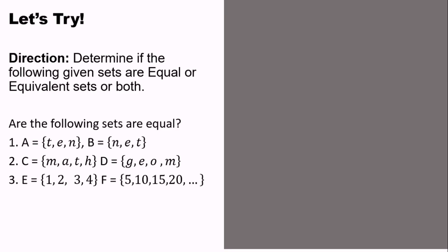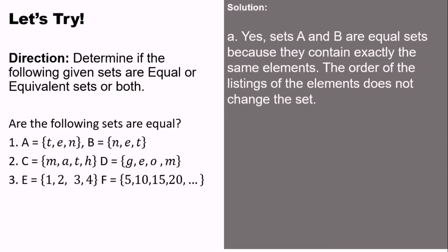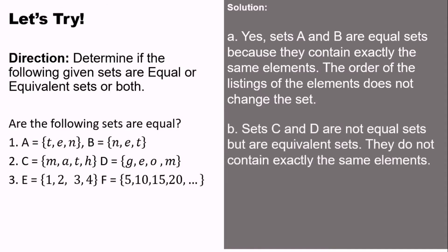So let's try. Direction: determine if the following given sets are equal or equivalent sets or both. Number 1: yes, set A and set B are equal, even though reversed. At the same time, they are also equivalent set. For number 2, set C and D are not equal set but are equivalent set. They have the same number of elements, but they don't have the same elements inside, so they are not equal sets.